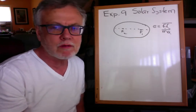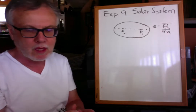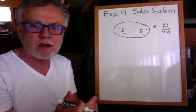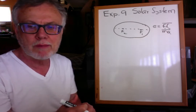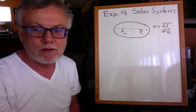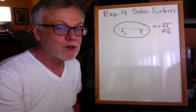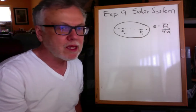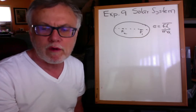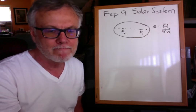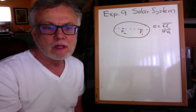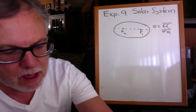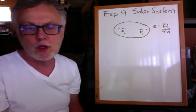Major planets are the large eight planets: Mercury, Venus, Earth, Mars, Jupiter, Saturn, Uranus, and Neptune. Yes, it is Uranus — that's the actual name. Minor planets are dwarf planets — these are small planets. An example is Pluto. We have assigned Pluto that identifier as a minor or dwarf planet.